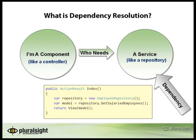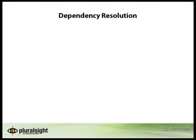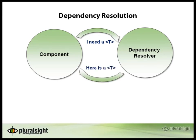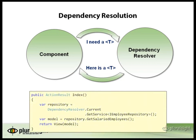One approach to having more flexibility when it comes to dependencies is to introduce an intermediary between the component and the ultimate dependency that it needs. We'll call this a dependency resolver. So a component can walk up to a dependency resolver and say, I need a T — in other words, I need an employee repository or something that implements an IEmployeeRepository interface. And a dependency resolver knows about all sorts of different services that are registered in an application, and it can respond and say, here is your dependency. In code, this might look something like this: instead of instantiating an employee repository directly, we'll walk up to a dependency resolver and say, get me a service that implements IEmployeeRepository. Then we get back something where we can invoke the methods that we expect, like GetSalariedEmployees.